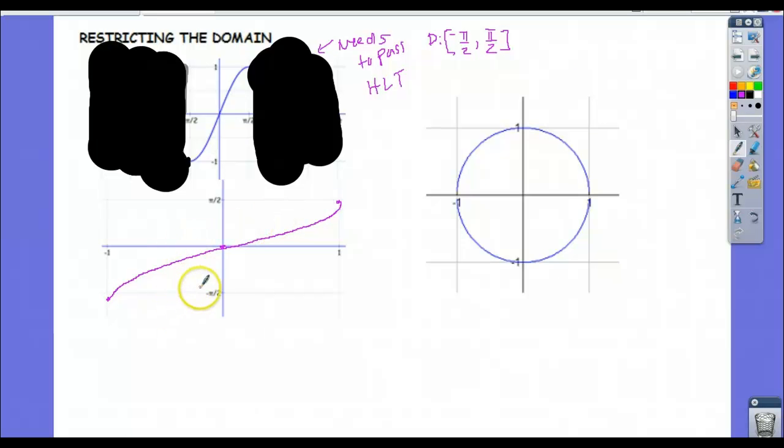So there is sine inverse and this is the one we use because now it's a function, right? It passes the vertical line test. So in restricting the domain up here of the original sine graph, we force its inverse to be a function. So now there's no confusion. When I say sine inverse of 0, the answer is 0.